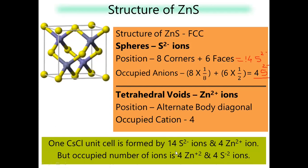One ZnS structure occupies 4 Zn²⁺ ions and 4 sulfide ions. Hence, ZnS crystal structure is neutral.